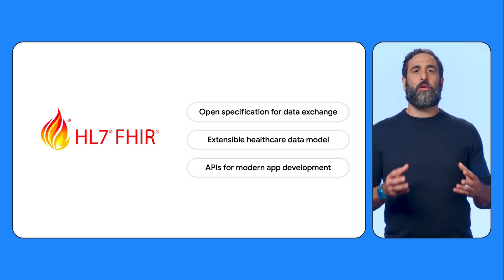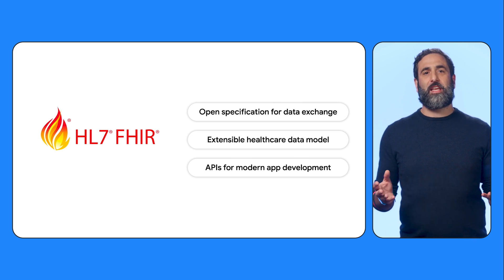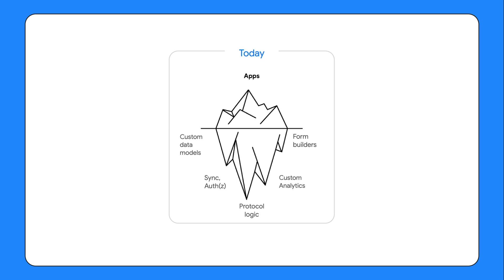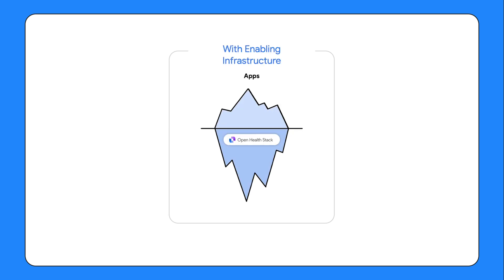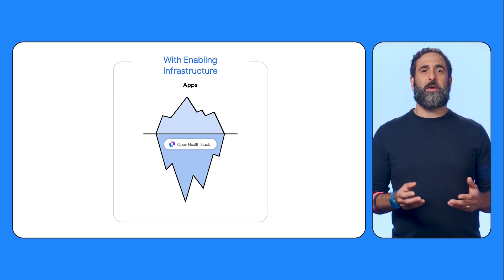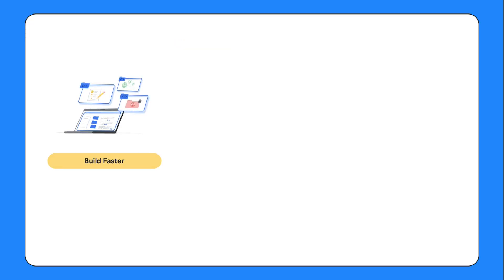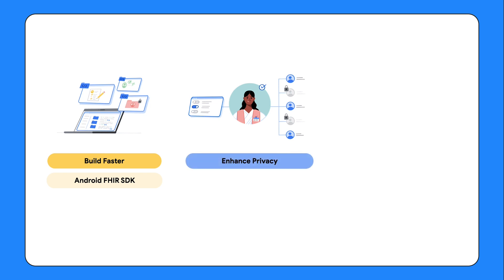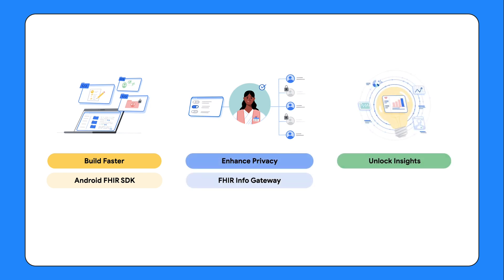These standards make it easier to build interoperable digital solutions, which is key to enabling person-centered care. When building digital health solutions, developers today spend a lot of time and resources maintaining a complete technical stack, and it can be difficult and time-consuming to adopt standards into new or existing solutions. With OpenHealth Stack, our goal is to lower the barrier to entry to make it easier for developers everywhere to work with open standards like FHIR. By providing this enabling infrastructure for digital health, we believe we can also help stimulate more local innovation. OpenHealth Stack is a suite of open-source components designed to help developers build secure, data-driven FHIR-based solutions faster. It has been developed in collaboration with the World Health Organization and a community of developers, and it's a recognized digital public good.